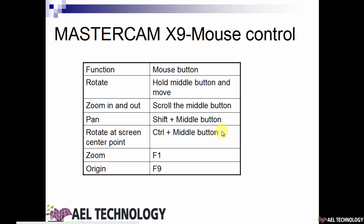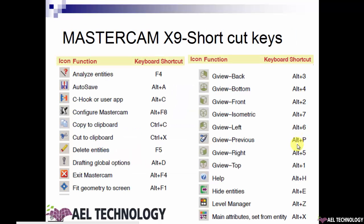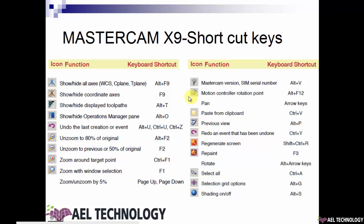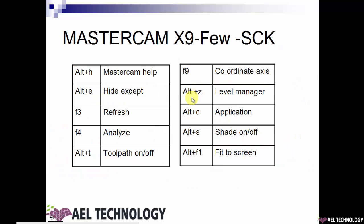If you want to zoom into a particular window, press the function key F1 and select the window. If you want to see the coordinate axis, press F9. There are a lot of shortcut keys in Mastercam — here are the 10 most commonly used. The first is Alt+H, which takes you to Mastercam help.